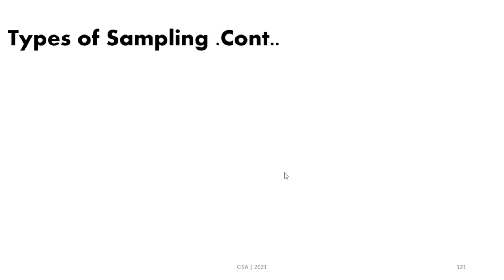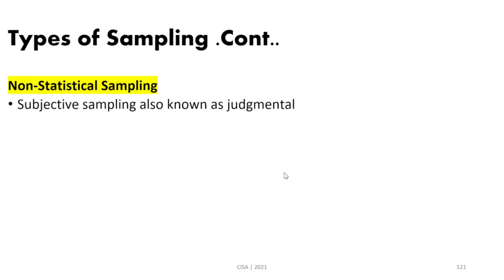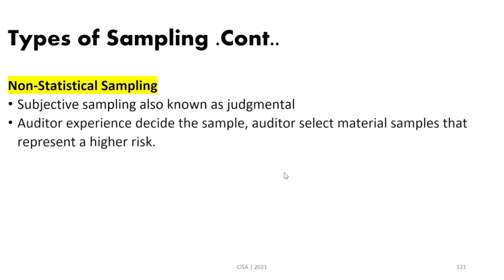We also have non-statistical sampling, which is the opposite of statistical sampling. It is subjective, not objective, and is also called judgmental sampling. The auditor applies experience in a non-statistical way because it is subjective and based on judgment. The auditor selects material or significant samples that represent a higher risk.